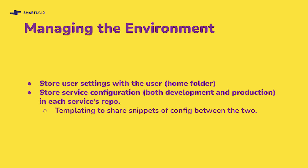The setup we've described needs quite a bit of configuration and management. We store the configuration for each service inside the service's repository in a directory named 'kubernetes'. Each repository stores both its production and development configuration. Using templating, we can even share snippets of config between production and development configurations. Each project fully encapsulates its own deployment information in Crane templates and ejson secrets, meaning every developer has all the information needed to deploy an instance of every application.